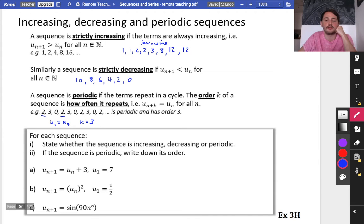So you've got increasing, decreasing and periodic. This is just some extra language that you might need to know about here. So first of all, state whether the sequence is increasing, decreasing or periodic. So to find the next number in the sequence, you take the previous one and you add on 3. The first one is 7.